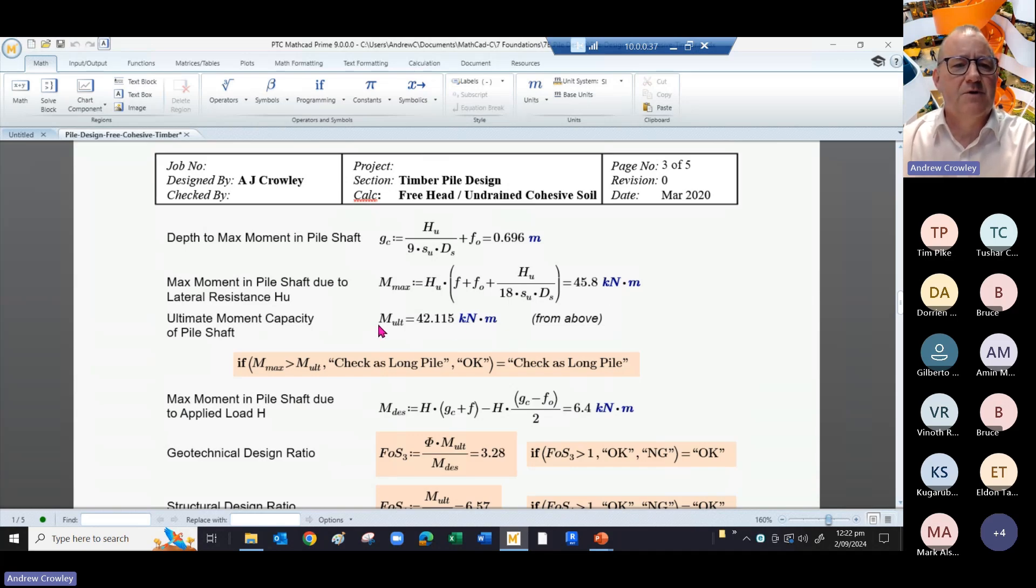We've already said that the moment capacity of the pile shaft is 42, so therefore your ultimate capacity of your pile is lower than the capacity induced by horizontal resistance. So we have a little flag saying you better check this as a long pile.